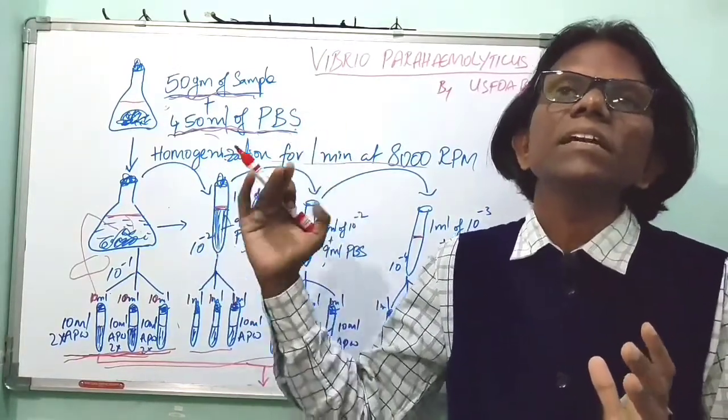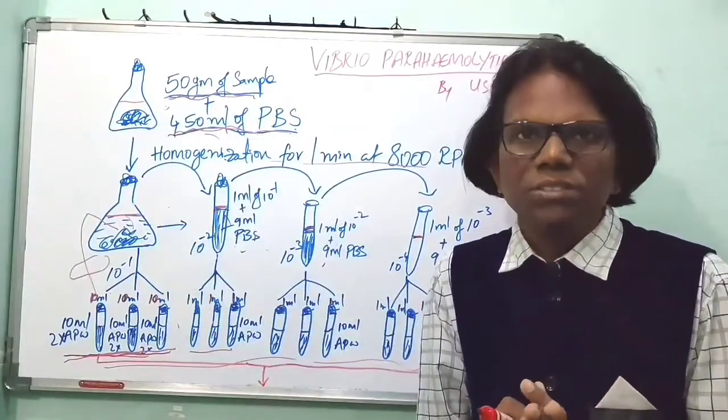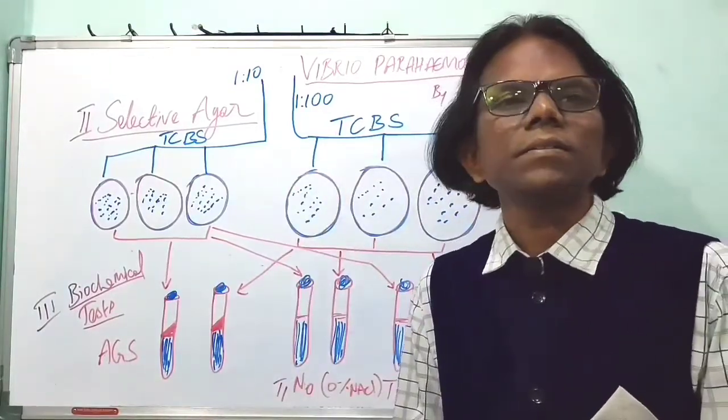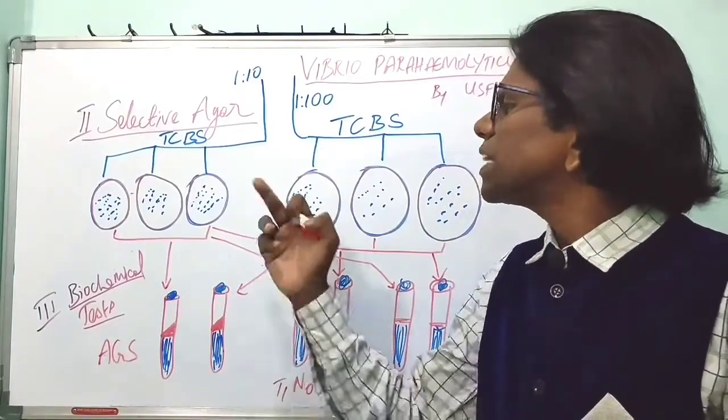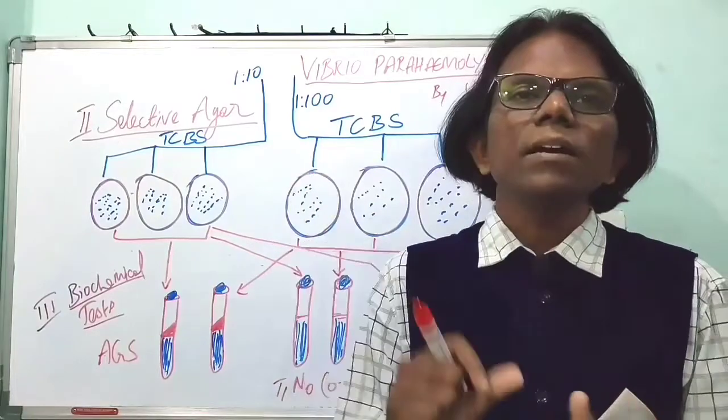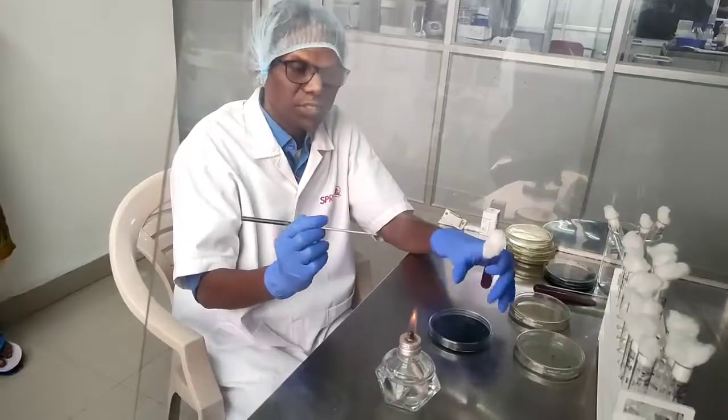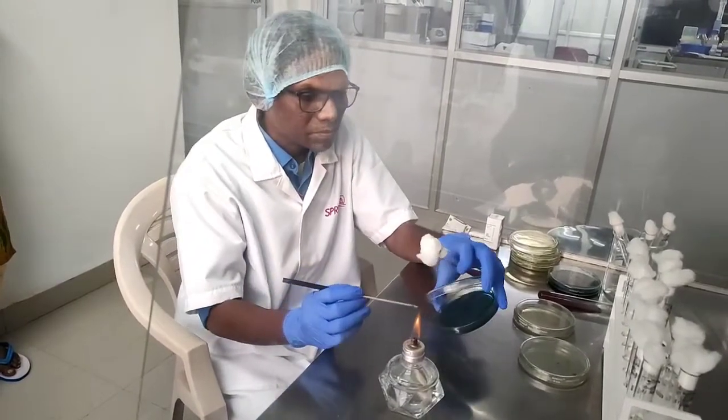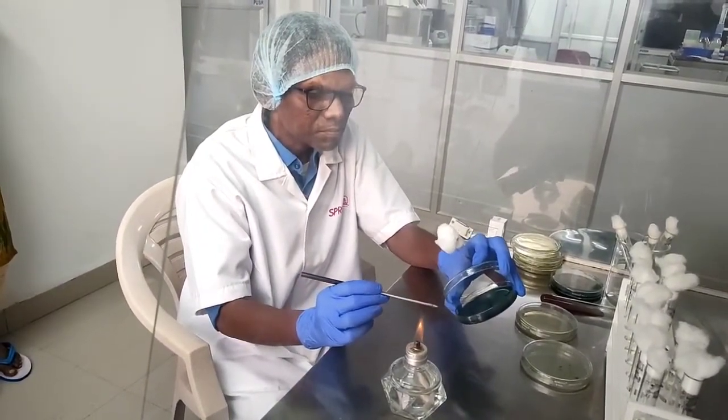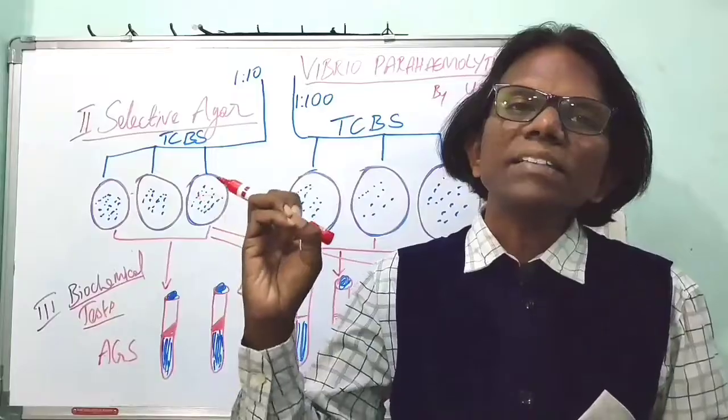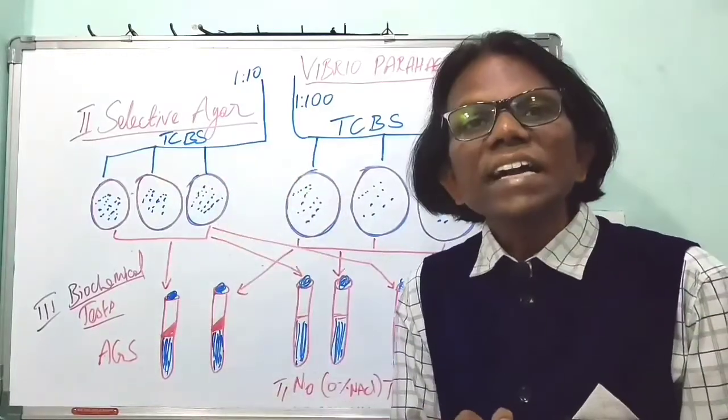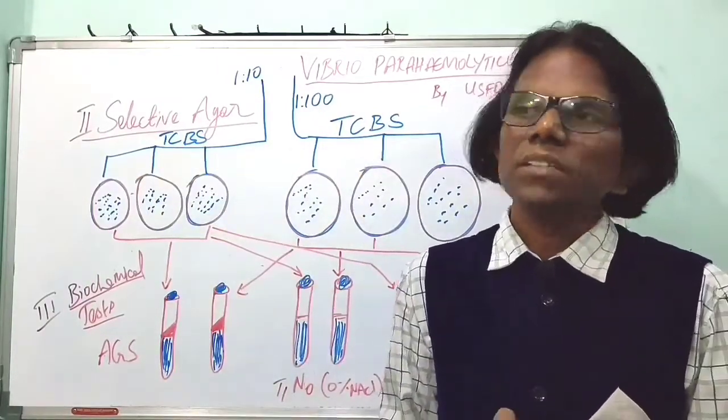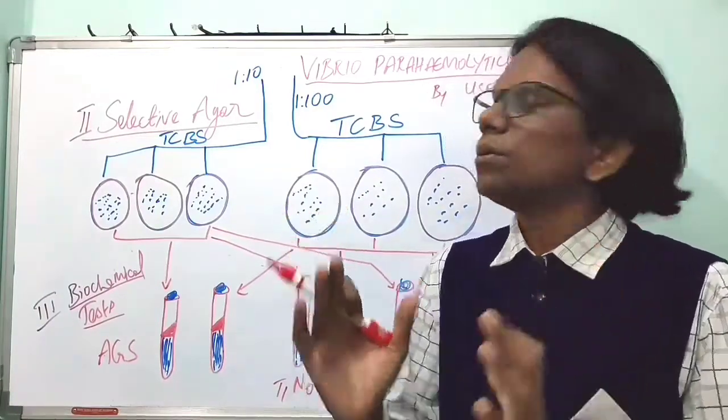After 16 to 18 hours of incubation, we will go for selective agar process. After overnight incubation of sample in primary enrichment APW, we have to transfer 3 mm loop full of inoculum onto surface dried TCBS plates. TCBS is a highly selective medium for Vibrio species. It will inhibit the growth of Enterobacteriaceae and other fecal coliforms while encouraging the growth of Vibrio species. Thiosulfate citrate bile salt sucrose agar is highly favorable medium for growth of Vibrio species.